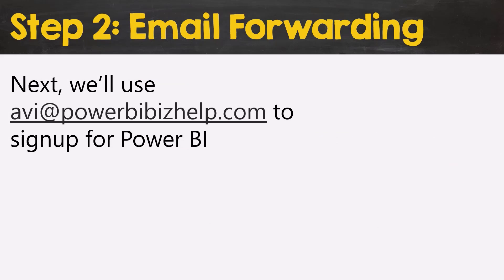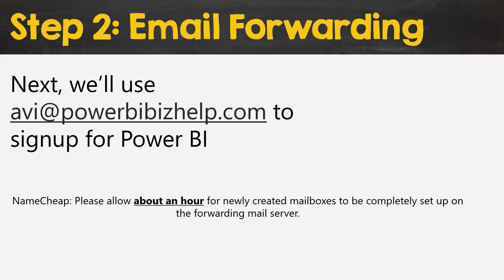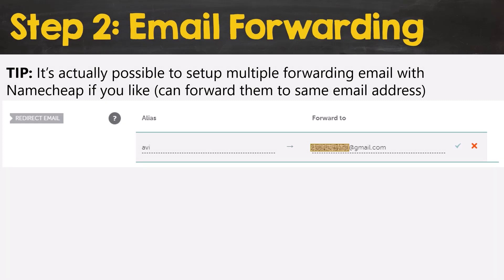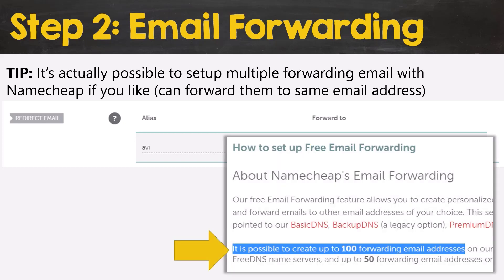Although there might be a pause here, as Namecheap says it may take up to an hour for the email forwarding to be set up. While you're taking a break, you might check out our new site PowerBIBizHelp.com — a site set up to offer free Power BI help to businesses impacted by the COVID-19 crisis. Now, as a tip: it's actually possible to set up multiple forwarding emails in this manner. Namecheap documentation mentions you can set up to a hundred forwarding email addresses, and theoretically you could use each one to create a free PowerBI.com account.